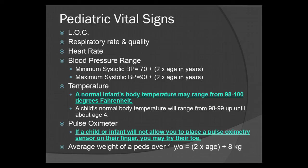For heart rate, you're going to check for a pulse. On a child, radial pulse is probably best; on an infant, look for your brachial pulse. For blood pressure ranges, the minimum systolic is figured out by taking 70 plus 2 times the age in years. So on a 2-year-old, that's 70 plus 4, giving a minimum systolic of 74. The maximum systolic equals 90 plus 2 times the age in years — so for a 2-year-old, the maximum systolic would be 94.